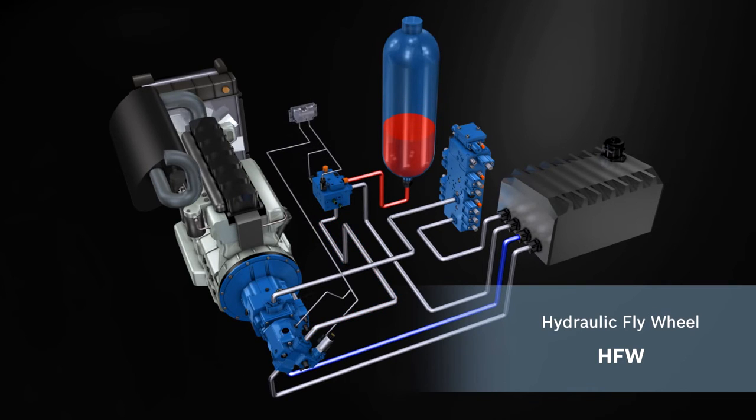Under power, the pressurized accumulator is emptied. The oil flows through the axial piston unit, which is now acting as a motor, and assists the combustion engine. Hydraulic energy is converted back into kinetic energy.